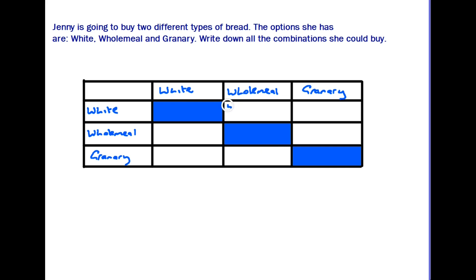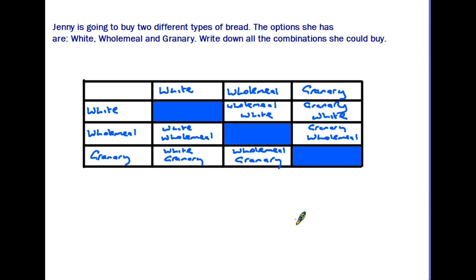The other options are all valid. She could choose wholemeal as the first loaf and white as the second, or a granary with a white. The completed table looks like this. As well as the blanked-out boxes, you'll also notice that boxes are duplicated — we have granary with white here and white with granary here. Similarly white and wholemeal, wholemeal and white, and the two at the bottom are the same.